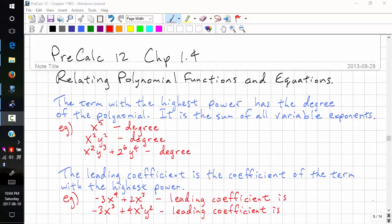This is Pre-Calculus 12, Chapter 1.4. This time we're going to look at relating polynomial functions and equations. The term with the highest power has the degree of the polynomial. It's the sum of all variable exponents.